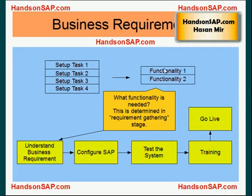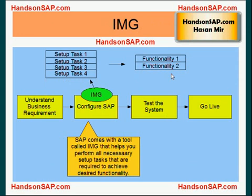You enter setup tasks in the setup screen so that certain functionality could be achieved. That desired functionality is determined in the business requirement stage, where you understand the business requirement of the client. SAP provides a tool called IMG, and this tool helps you determine what tasks are needed to be performed in order to achieve the desired functionality.